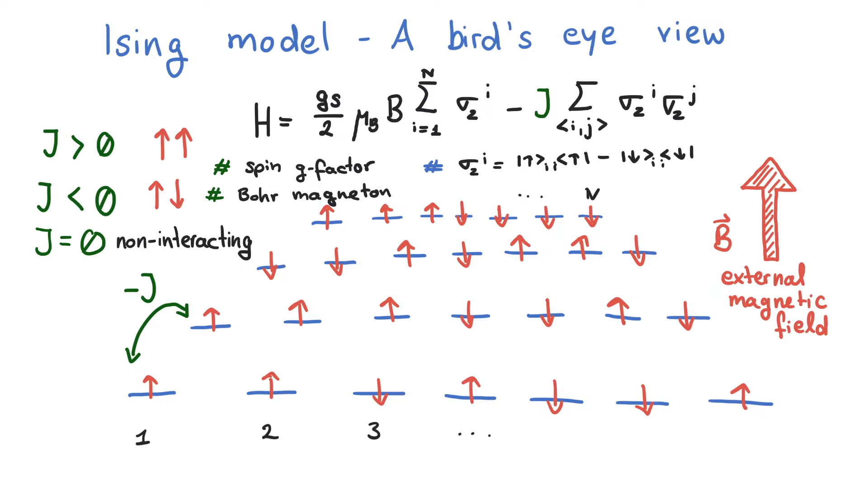That's all we need to understand the second term as well. It contains the coupling of neighboring sites, a sum over all nearest neighbors and the product of sigma matrices at site i and j. As mentioned, a positive j will favor neighboring spins to be parallel.